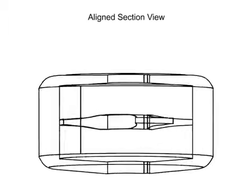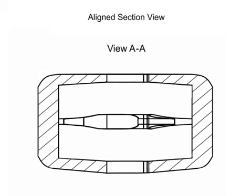As with all section views, to avoid confusion, ribs, webs, and other thin parts such as the spokes on a wheel are not shown with section lines.